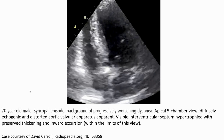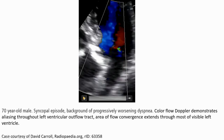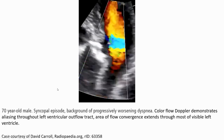This is a case of a 17-year-old male with a single episode in the background of progressive exertional symptoms. Five-chamber view shows an echogenic and distorted aortic valvular apparatus. The ventricular septum hypertrophy is visible with preserved thickening and inward excursion. Color Doppler demonstrates aliasing throughout the left ventricular outflow tract area, extending through most of the visible left ventricle.